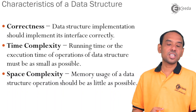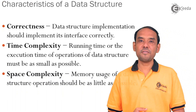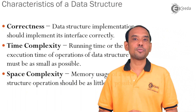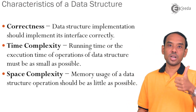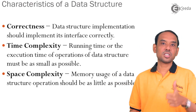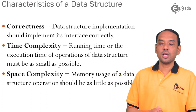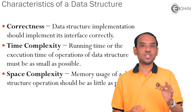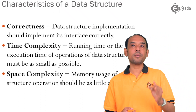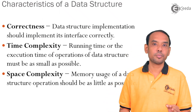Now we are going to learn about the characteristics of a data structure. Every data structure should follow these characteristics. The first one is correctness — data structure implements the interface, so all data structures should implement their interface correctly.